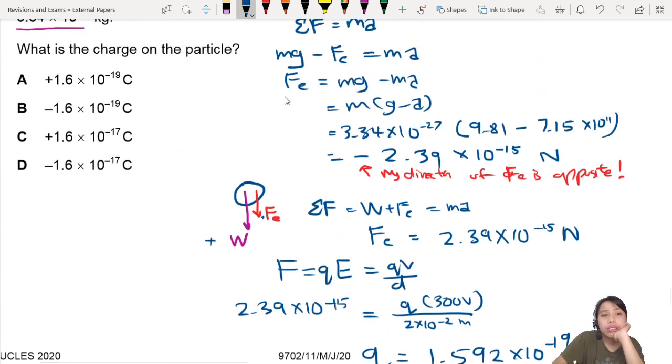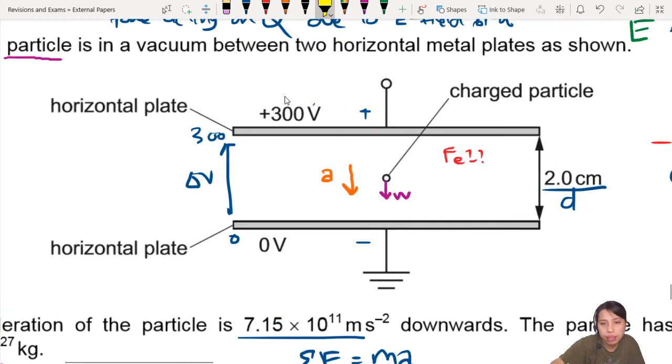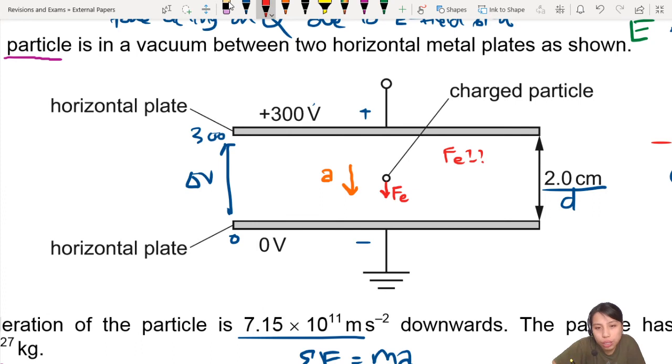But you look at the answer. Okay, this is wrong already. This one is incorrect. But is it positive or is it negative? Confusion. Stay calm. Look, we have decided that the correct direction of the electric force is downwards. So our particle is experiencing an electric force downwards. What is attracted to the negative? A positive particle.